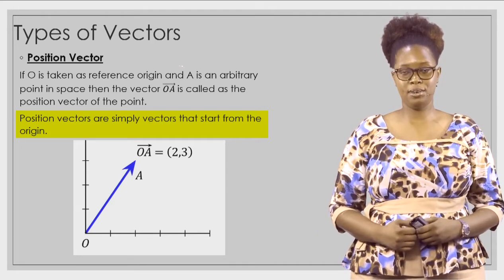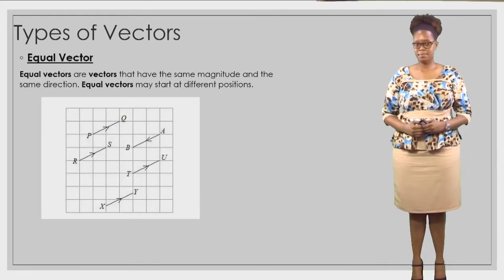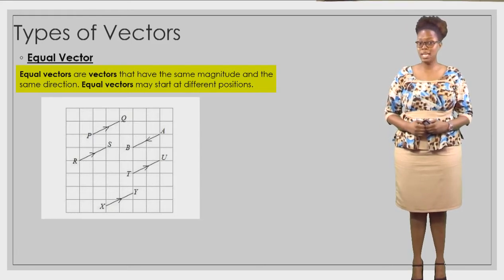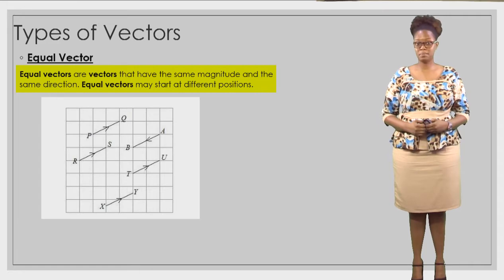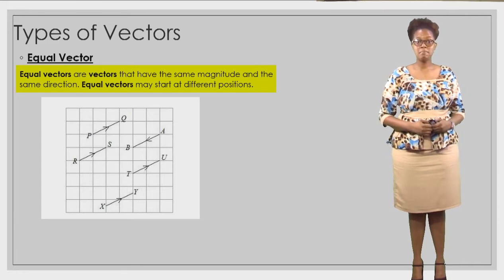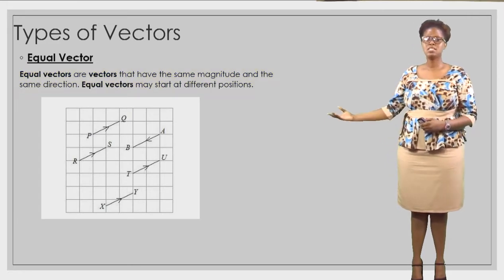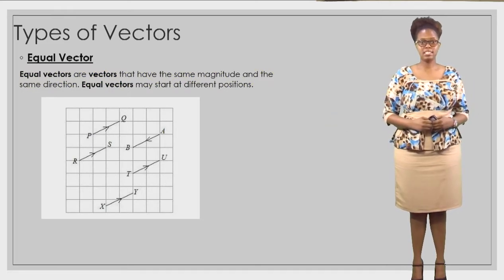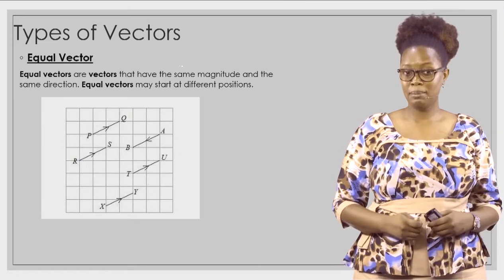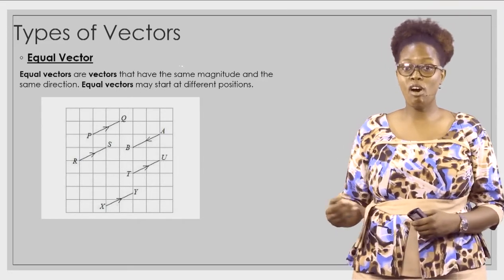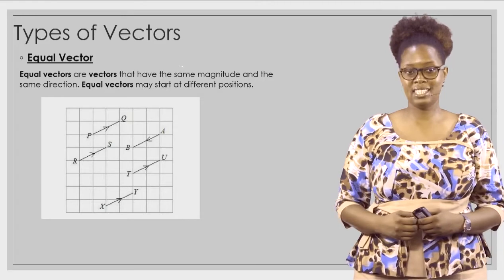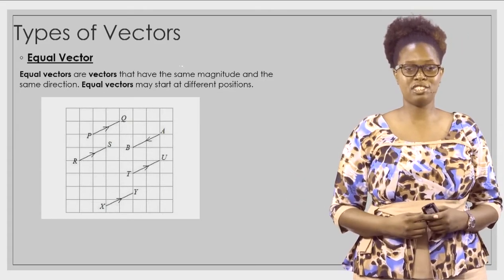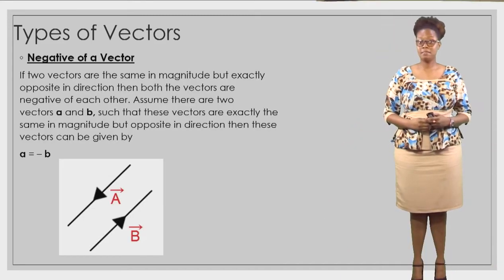Equal vectors are vectors that have the same magnitude and the same direction. Equal vectors may start at different positions. Looking at some examples, we can see that all of them are equal vectors except vector AB, because that one is going in the opposite direction.